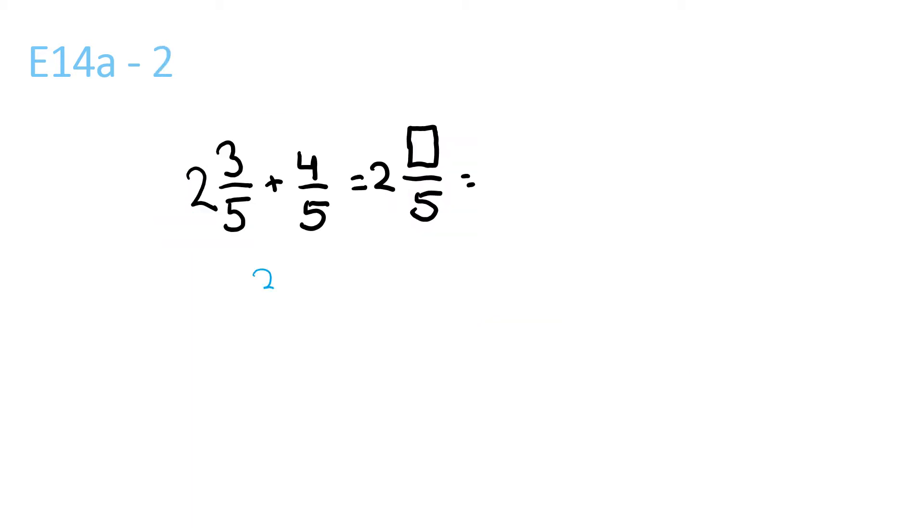So basically, let's do this question with 3/5 plus 4/5 is equal to 7/5, as I showed you in the other video, is equal to 1 and 2/5. So you'll just put a 7, because 3 plus 4 is 7, 2 and 7/5. So now, imagine that the 2 isn't there.